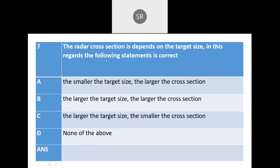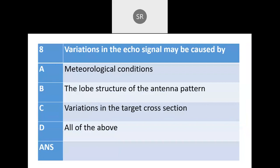Next question: The radar cross section depends on target size. Which statement is correct? A — the smaller the target, the larger the cross section; B — the larger the target, the larger the cross section; C — the larger the target size, the smaller the cross section; D — none of the above. Since cross section relates to target area, a larger target gives a larger cross section. The correct answer is B.